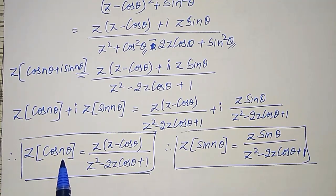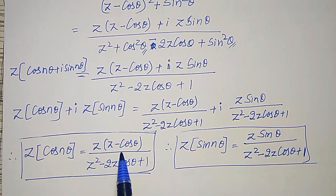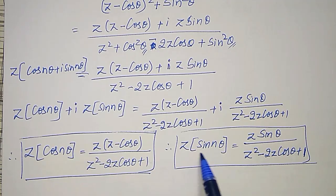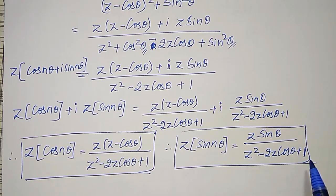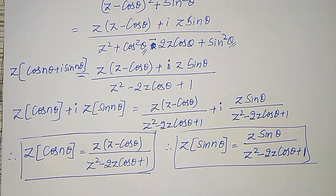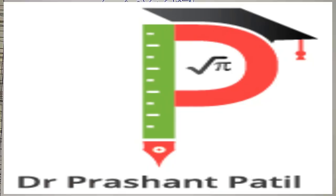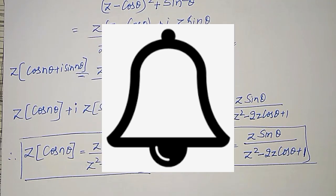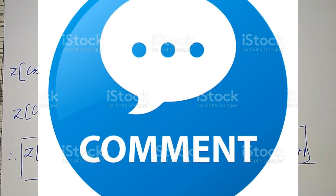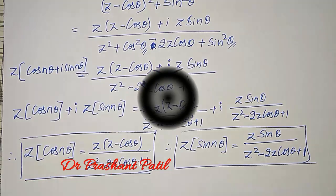And equating imaginary parts: Z transform of sin(nθ) equals z·sin(θ) divided by z² minus 2z·cos(θ) plus 1. These two formulas are very important — the denominators are the same for both. Some more examples using the damping rule will be done in my next videos. If you haven't subscribed my channel, please subscribe, hit the bell icon, like, comment, and share. Thank you friends.